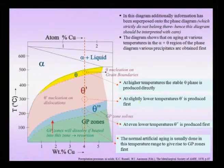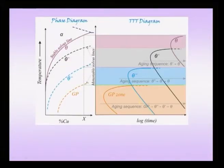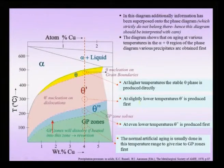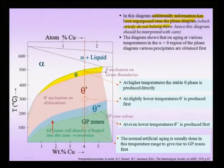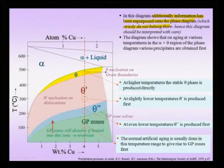We want to carry out aging at low temperatures to be in a regime where nucleation is dominant and growth is sluggish — giving many nuclei that do not grow very much. Next, we will use two diagrams to understand what happens during aging: an extended version of the phase diagram and an extended version of the TTT diagram. Additional metastable phase information has been superimposed onto the phase diagram.